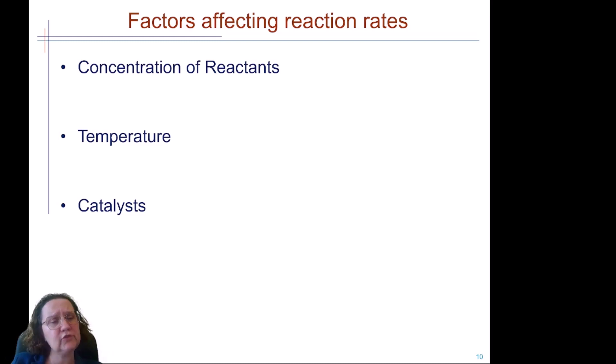They have to collide in the right way with the two atoms that are going to make a bond colliding with each other. So if you have more reagents, if you have more reactants, then it's more likely they will collide and it's more likely that some of those collisions will be effective. So concentration is one aspect and that is why in many cases reactions tend to slow down after a period of time because you have less and less reactant, therefore you have fewer effective collisions.